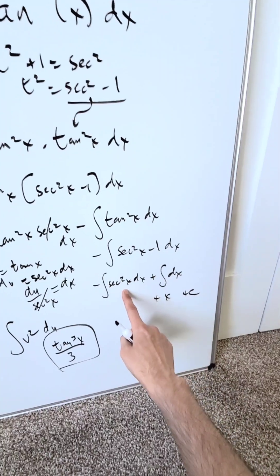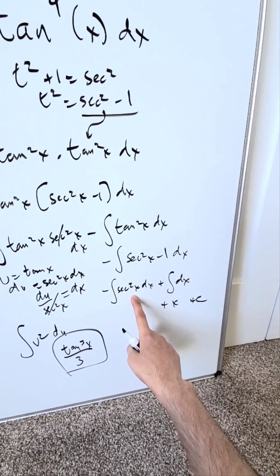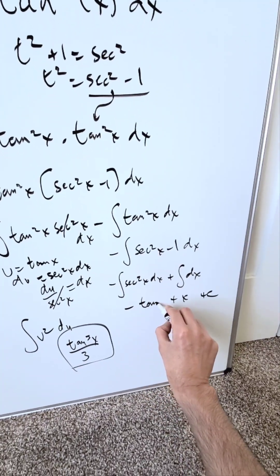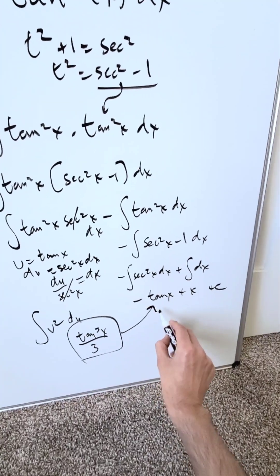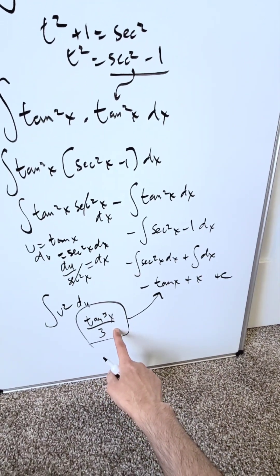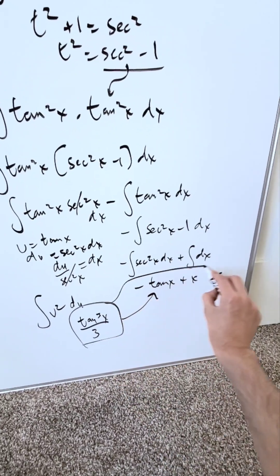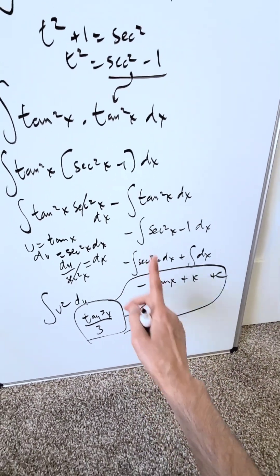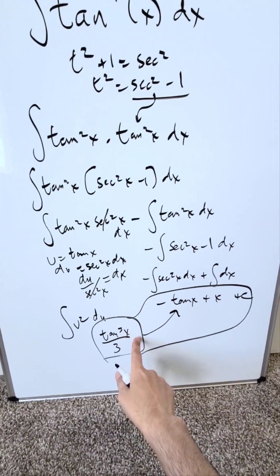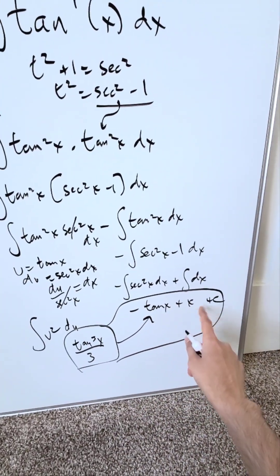Bringing everything together: the antiderivative of sec²(x) is tan(x), so we have a minus tan(x) from that integral. Combining all of these, the final antiderivative is tan³(x)/3 minus tan(x) plus x plus C. This is the complete antiderivative for the original integrand tan⁴(x), and we are done.